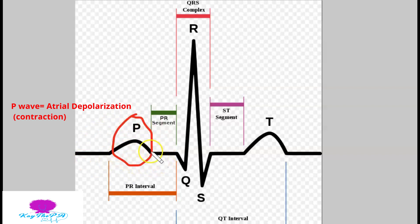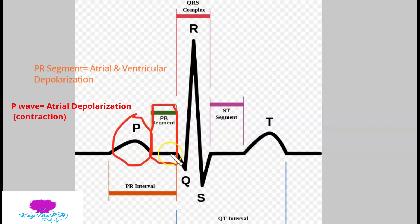Next we have our PR segment. This is the short period of time between where the atrium contracts and the ventricles contract — the short time between atrial depolarization and ventricular depolarization.